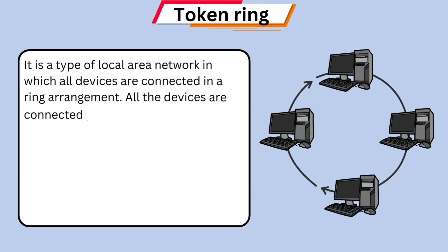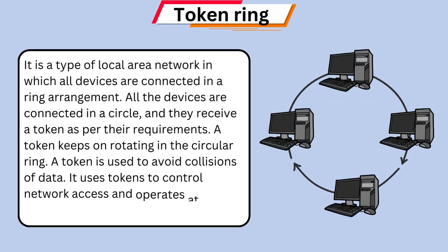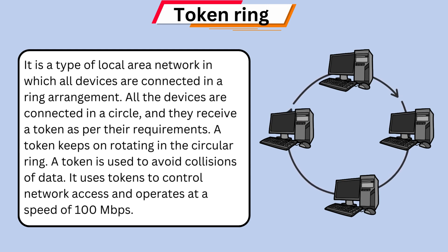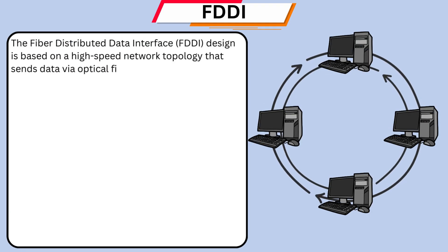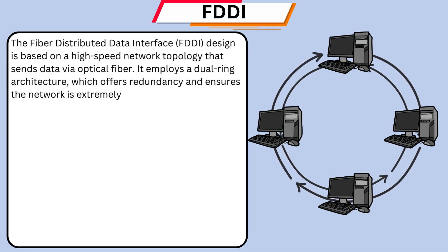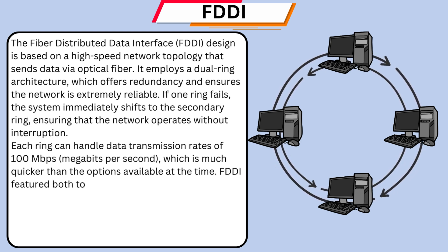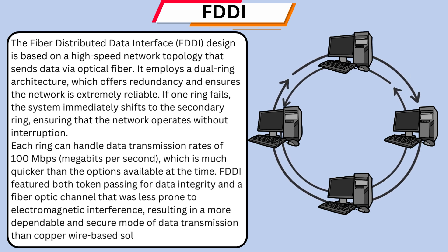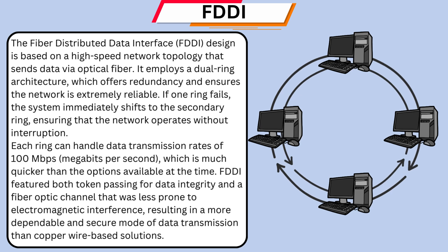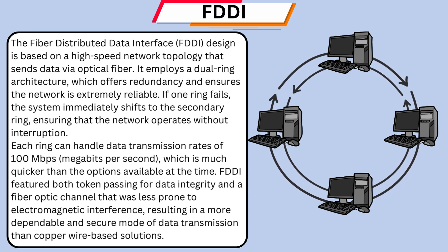Token ring is a type of local area network in which all devices are connected in a ring arrangement. The fiber-distributed data interface employs a dual ring architecture, which offers redundancy and ensures the network is extremely reliable. If one ring fails, the system immediately shifts to the secondary ring, ensuring that the network operates without interruption.